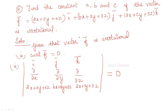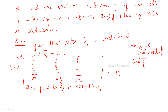Next: find the constants A, B, C. Sometimes solenoidal or irrotational vectors will be given and you are asked to find the constants. If divergence of F = 0, it is called solenoidal. If curl F = 0, it is called irrotational. These are the definitions.